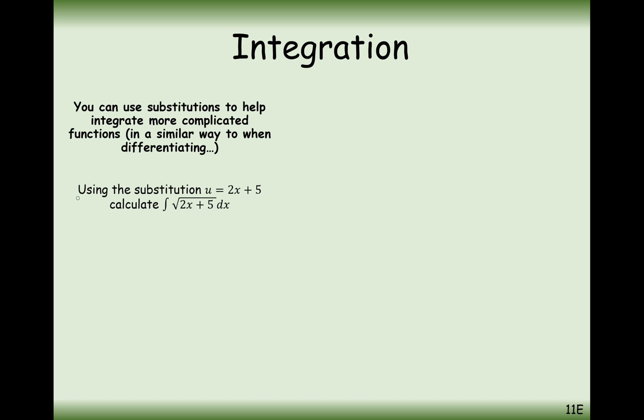This is how we're going to do it. There are lots of different steps to this, so make sure you're paying attention the whole way through. Using the substitution u is equal to 2x plus 5, calculate the integral of the square root of 2x plus 5 dx. There are four steps mostly when you do integration by substitution.